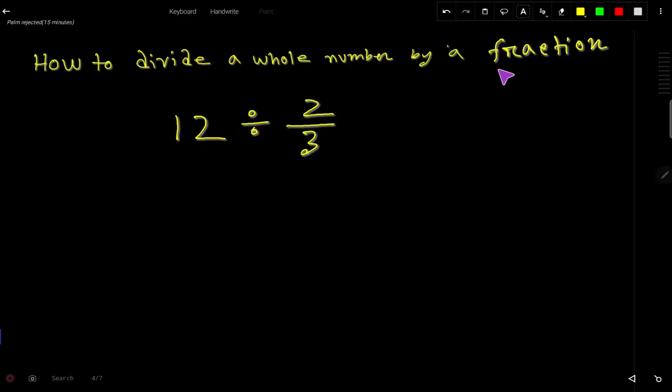How to divide a whole number by a fraction? 12 is a whole number and 2 over 3 is a fraction. So how to divide 12 by 2 by 3?